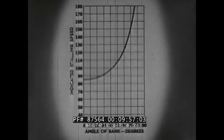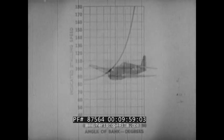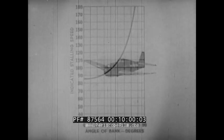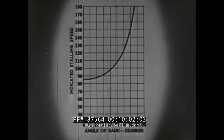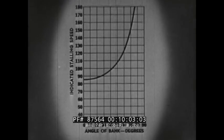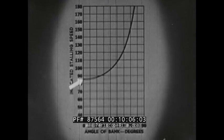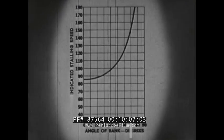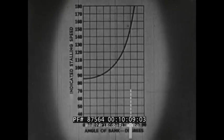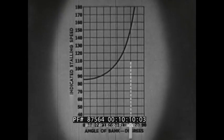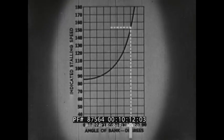Now let's look at a service-type aircraft such as the F6F. With normal load, the F6F in level flight clean stalls at 86 knots. And in a 70-degree bank, you need about 155 knots to be safe.